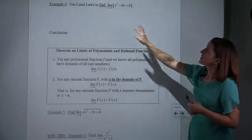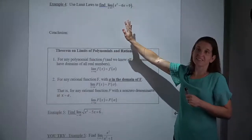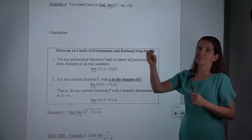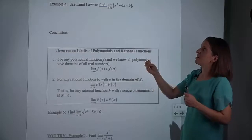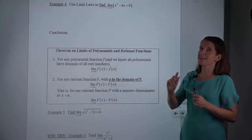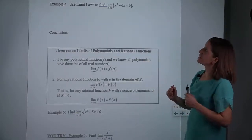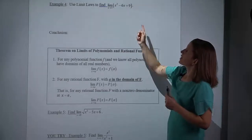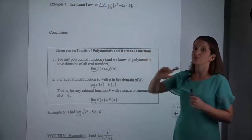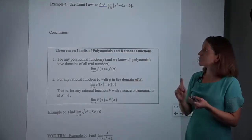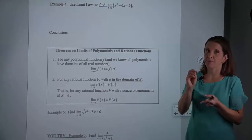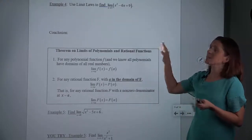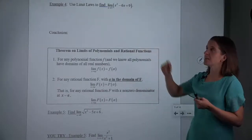So here is the one and only example where we're actually going to show every single limit law to observe some patterns. It says: use the limit laws to find this limit. Notice there's no graph — I'm not tracing. There's no table of values. I'm not plugging in values and seeing what it's getting close to. I am doing this algebraically.